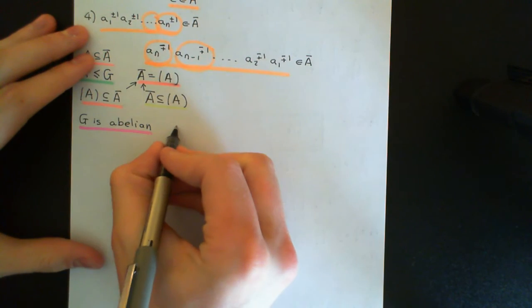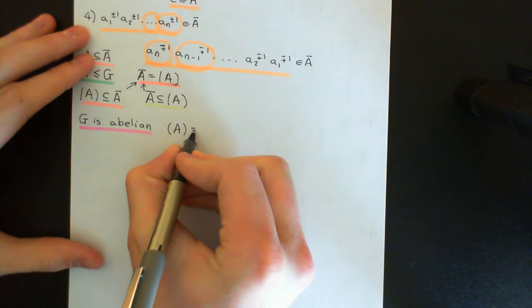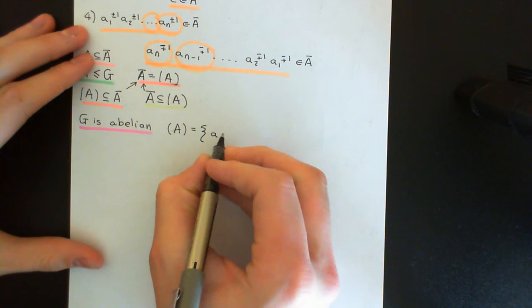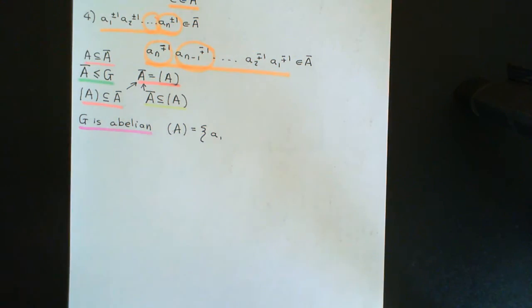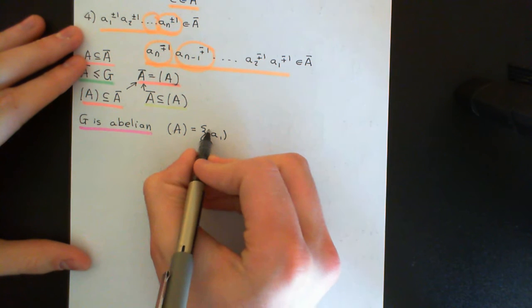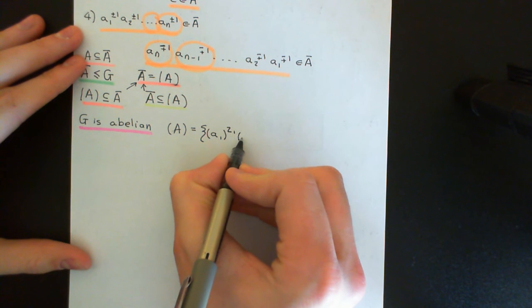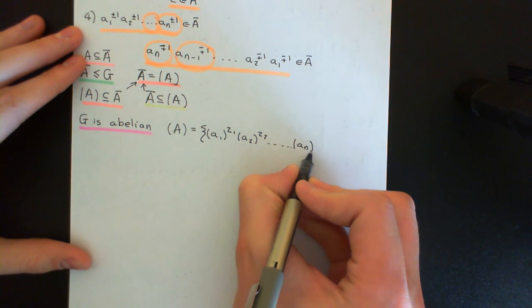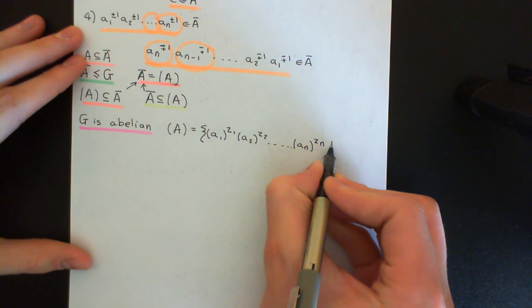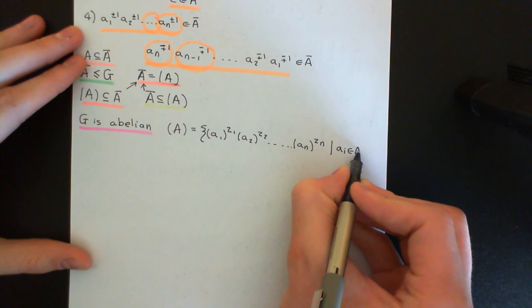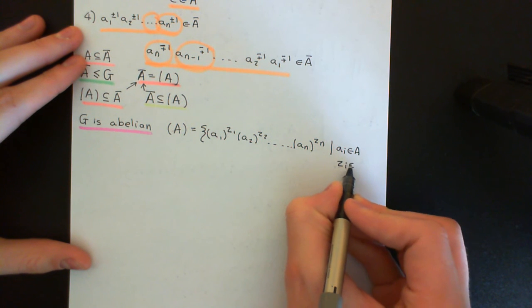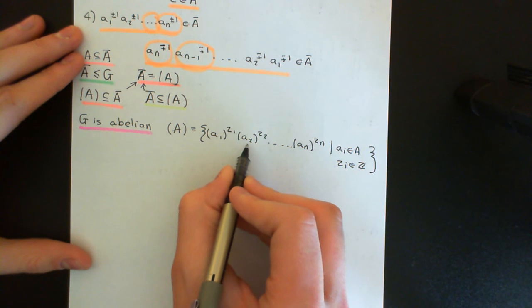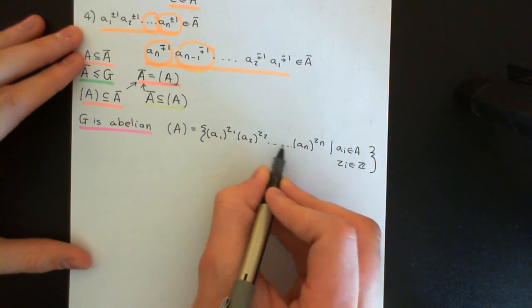So if you're working in an abelian group, then the subgroup generated by A is just going to be the subset consisting of all finite products of elements of A where it looks like A₁^z₁ · A₂^z₂ · … · Aₙ^zₙ, where the Aᵢ are elements of the set A and the zᵢ are integers. And now you can say that all of these Aᵢ will be distinct — so A₁ will not be the same as A₂, etc. — because you've collected all terms involving each element together.